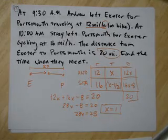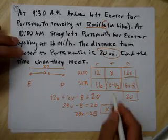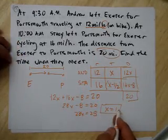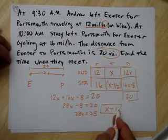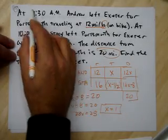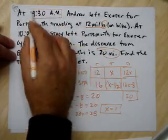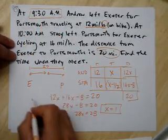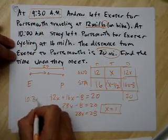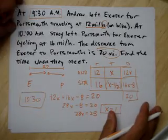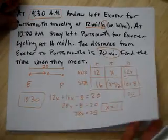X equals 1 hour. Andy left at 9:30, and one hour later is 10:30. So they meet at 10:30. It's important to check that you're answering the right question.